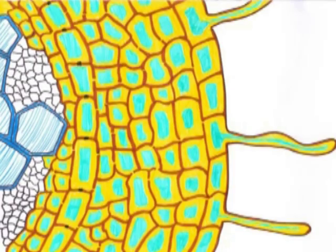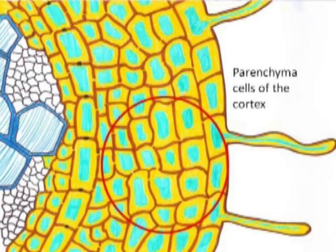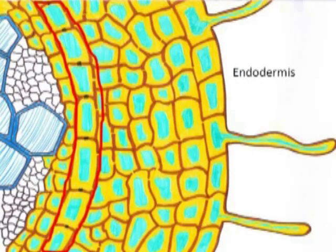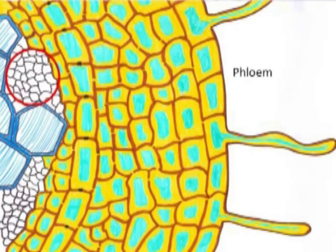This video shows us water movement through a root. As far as the structure of the root is concerned, this is the root hair, which is in contact with the soil water, then the parenchymatous cells of the cortex of the root, then the endodermis. Beyond that, there are xylem cells, and adjacent to the xylem cells, phloem cells.